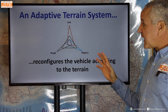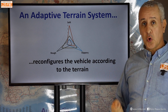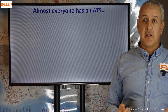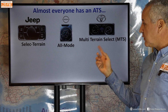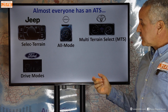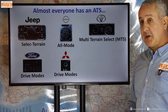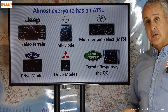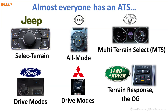An adaptive terrain system reconfigures the vehicle according to the terrain. Pretty much everyone these days has an ATS: Jeep has Select Terrain, Nissan has All Mode, Toyota has Multi-Terrain Select (MTS), Ford and Mitsubishi just call them drive modes, and Land Rover is the OG with Terrain Response.